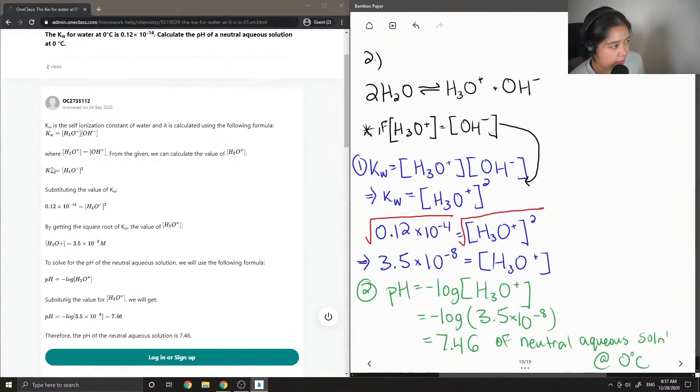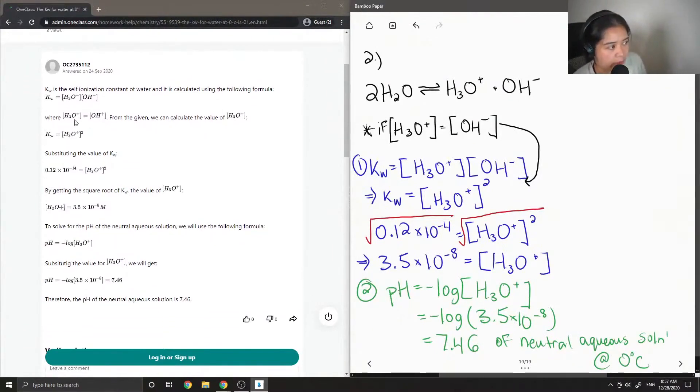Kw is the self-ionization constant of water and it is calculated using the following formula: kW is equal to H3O plus times OH minus, where the concentration of H3O plus is equal to the concentration of OH minus. And from the given we can calculate the value of H3O plus.